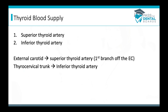For blood supply, the thyroid has the superior thyroid artery and the inferior thyroid artery. The superior thyroid artery is the first branch off of the external carotid artery. The inferior thyroid artery branches from the thyrocervical trunk. The superior supplies the top part and the inferior supplies the bottom part of the thyroid.